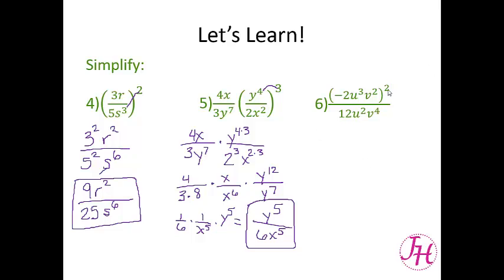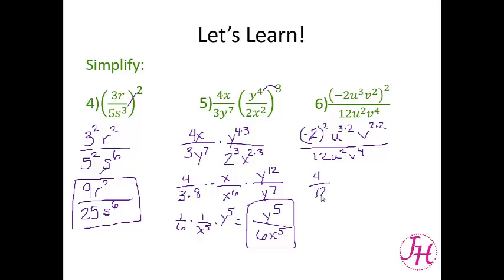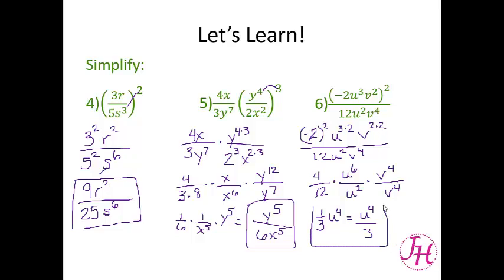Now let's try number 6. We're going to distribute that square to every item. So we have negative 2 — remember to put it in parentheses because everything needs to be squared — u to the 3 times 2, v to the 2 times 2. The denominator stays the same: 12, u squared, v to the 4th. Up here this becomes 4 over 12, times u to the 6th over u squared, times v to the 4th over v to the 4th. So 4 over 12 gives us 1 third. Then 6 minus 2 gives us u to the 4th. And 4 minus 4 is 0, so this whole expression becomes 1. You can write it as 1 third u to the 4th, or as u to the 4th over 3 — either is acceptable.